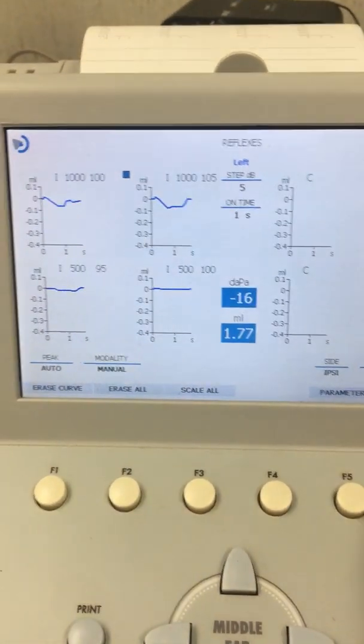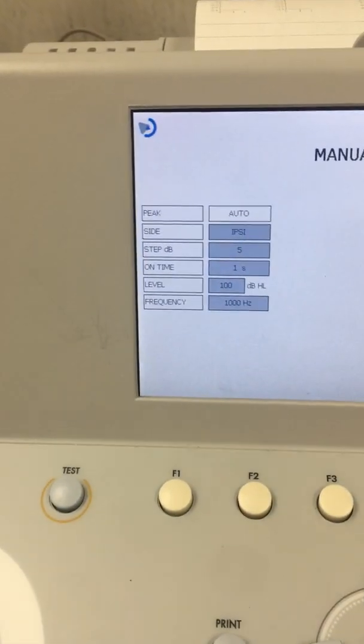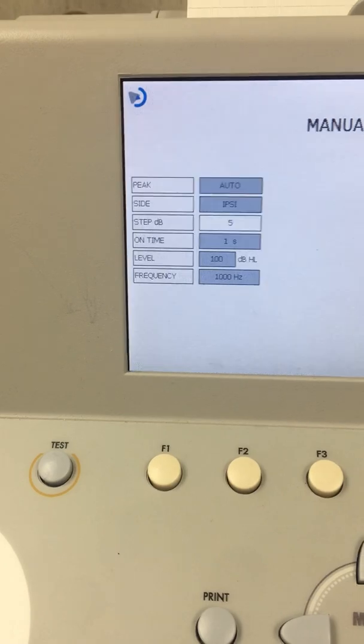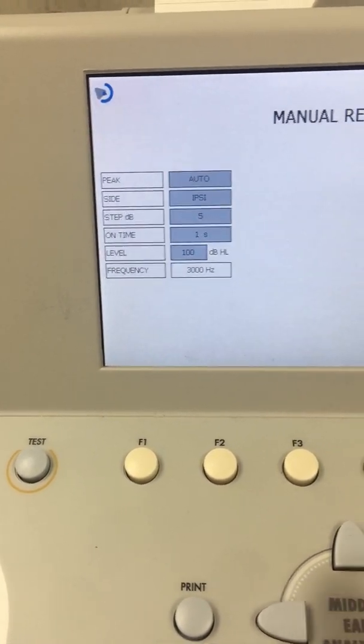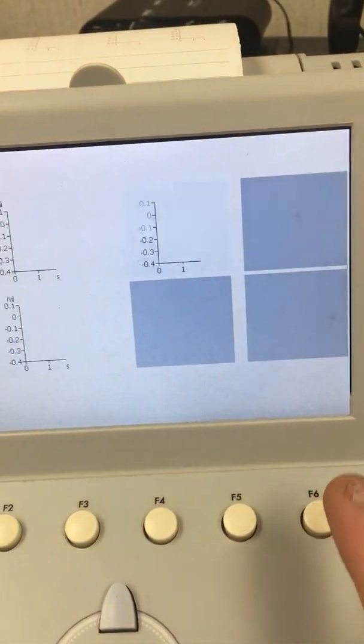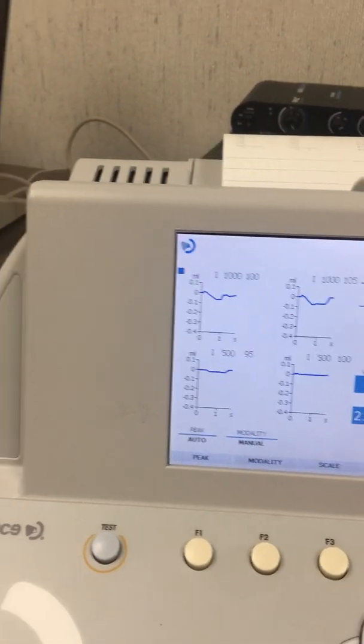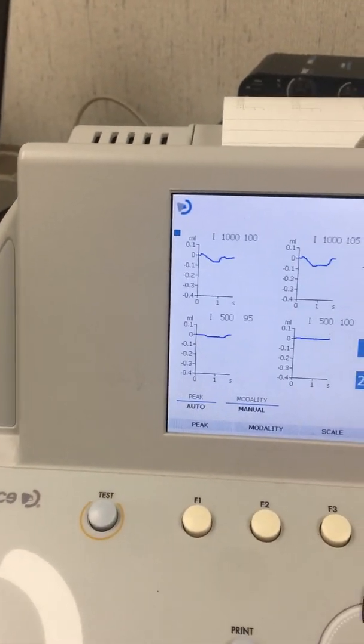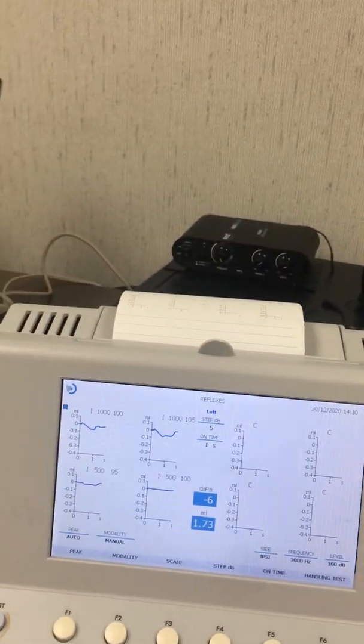And if you want to switch to another, just hit handle test F6, F5, scroll down again and do a thousand, two thousand, three thousand, whatever you want to do. Then go to test, make sure you switch to the left side, make sure it says ipsy, and press your start stop button.